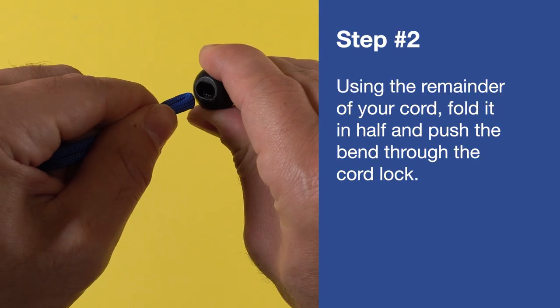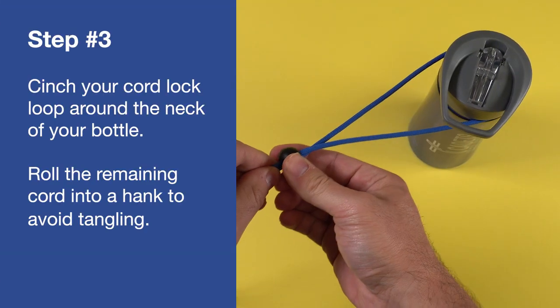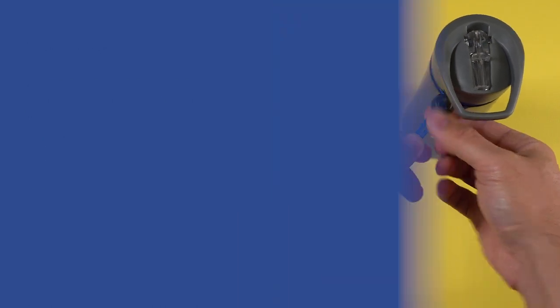Using the remainder of your cord, fold it in half and push the bend through the cord lock. Cinch your cord lock loop around the neck of your bottle. Roll the remaining cord into a hank to avoid tangling.